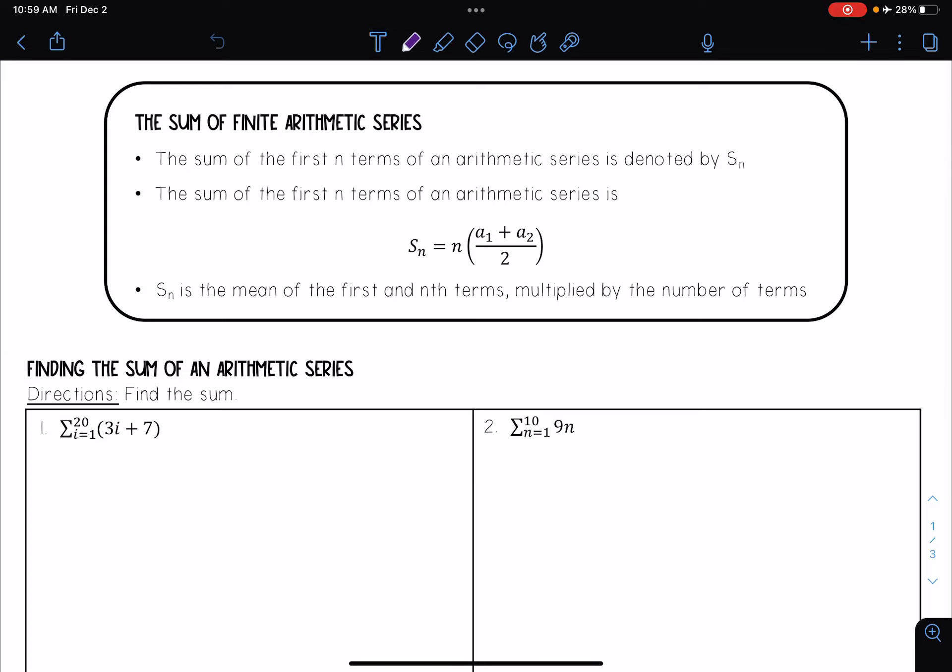The sum of the first n terms of an arithmetic series is denoted by Sn. We can find this with the formula Sn equals n times a1 plus an over 2, where Sn is the mean of the first and nth terms multiplied by the number of terms.